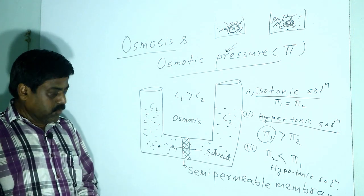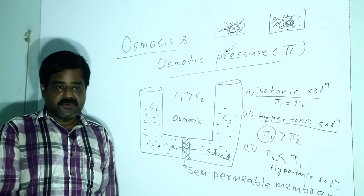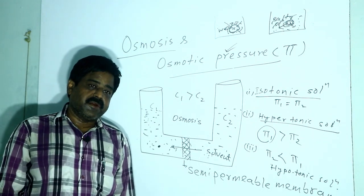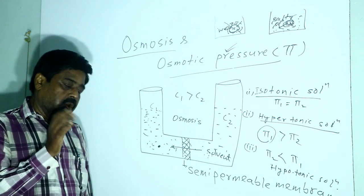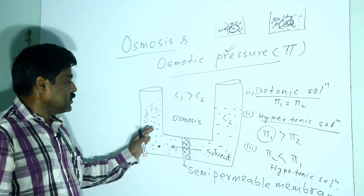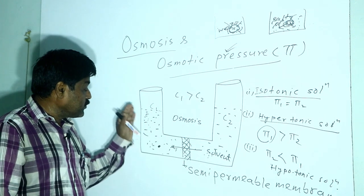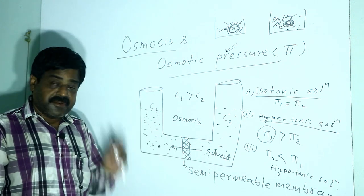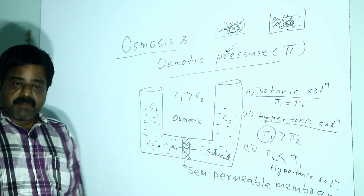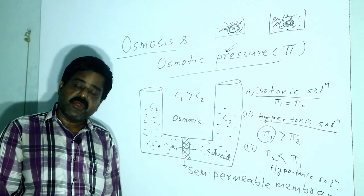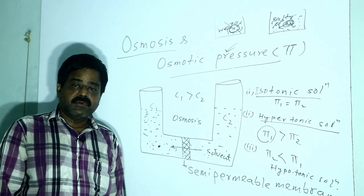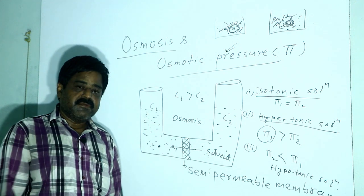Osmotic pressure is a colligative property, meaning it depends on the concentration of solute particles — specifically, the number of solute particles present in the solution. Osmotic pressure also depends on concentration and temperature.